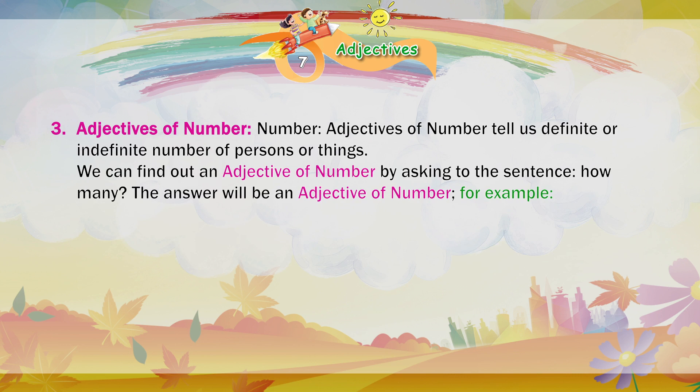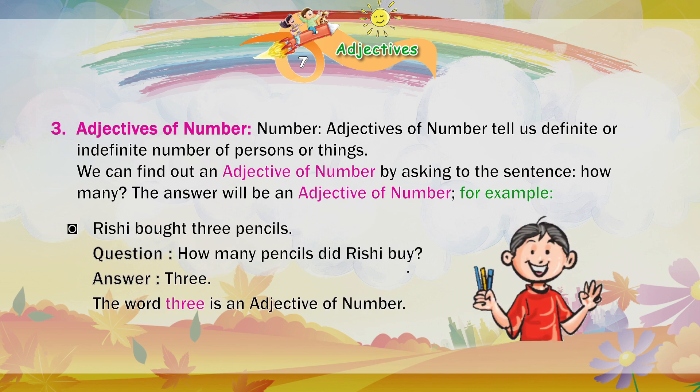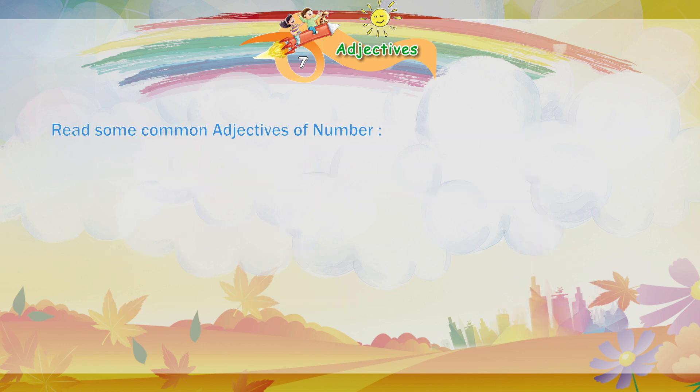Adjectives of number tell us the definite or indefinite number of persons or things. We can find out an adjective of number by asking the question 'How many?' The answer will be an adjective of number. For example: Rishi bought three pencils. Question — How many pencils did Rishi buy? Answer — Three. The word 'three' is an adjective of number.